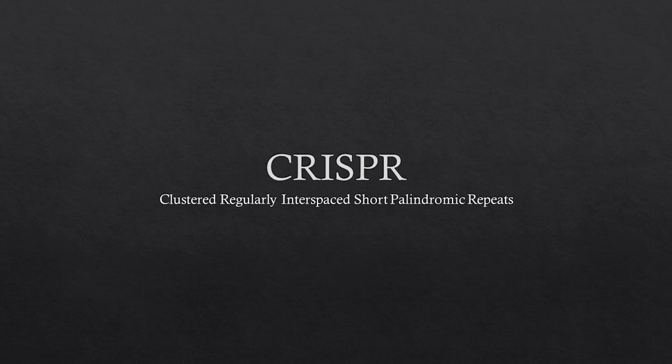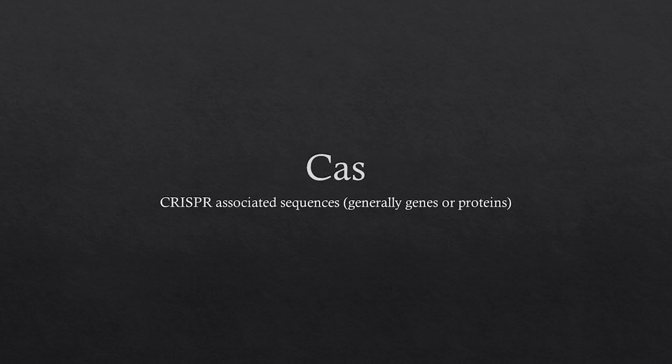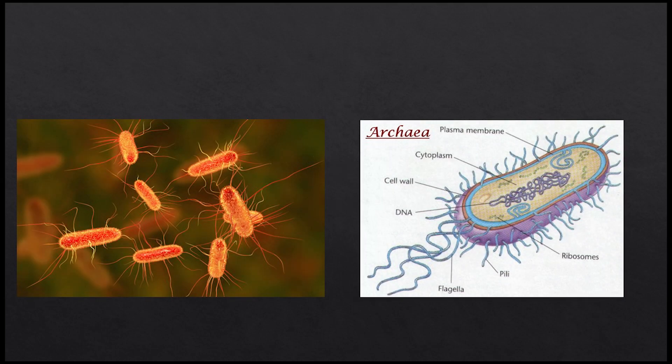Back to our discussion on CRISPR. CRISPR stands for Clustered Regularly Interspaced Short Palindromic Repeats — that's a mouthful — Clustered Regularly Interspaced Short Palindromic Repeats. CAS stands for CRISPR-Associated Sequences, which are generally genes or proteins. CRISPR-CAS systems are associated with adaptive immunity in both bacterium and archaea, as well as some other prokaryotic organisms.